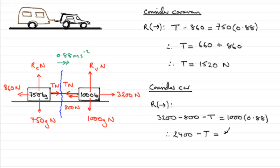Add T to both sides, take 880 away from 2400, and you end up with T equaling 1520 newtons.